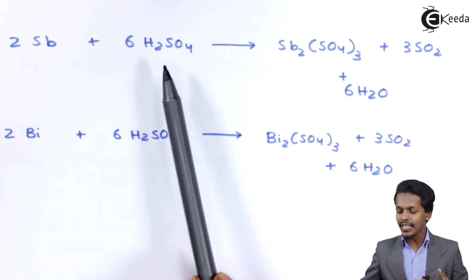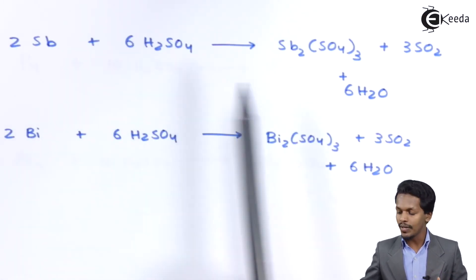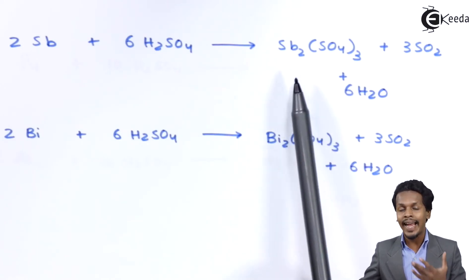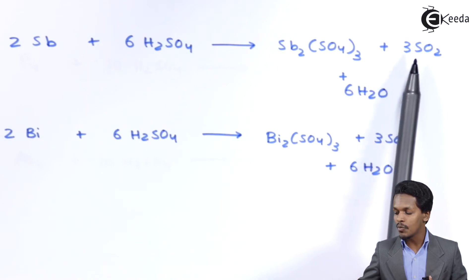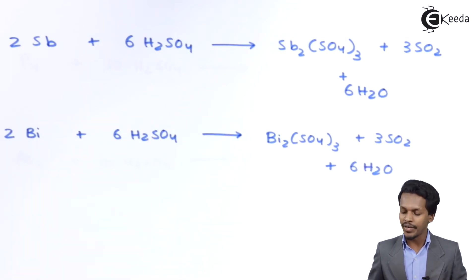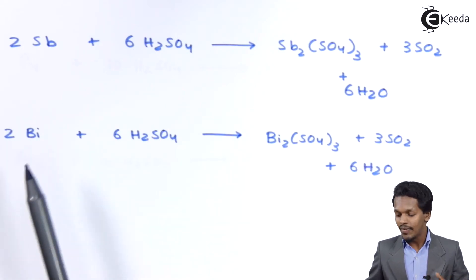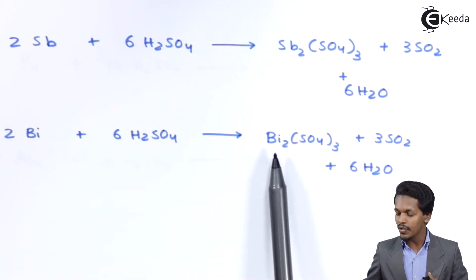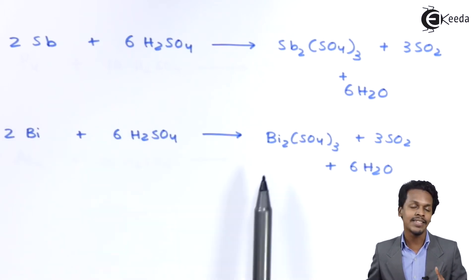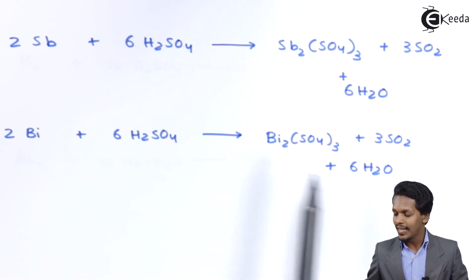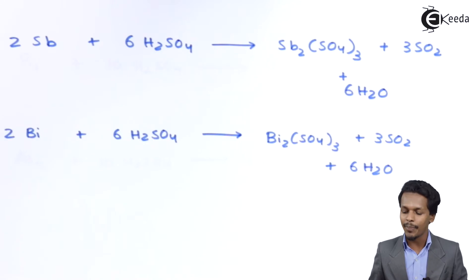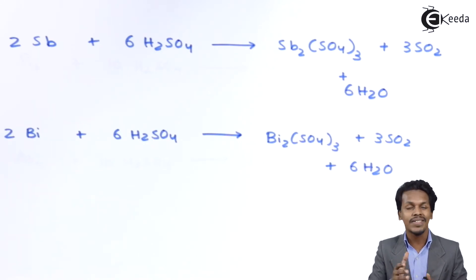Antimony is reacted with hot and concentrated H2SO4 to produce Sb2(SO4)3, which is antimony sulphate, along with 3 moles of SO2 and H2O as a by-product. This was the reaction of group 15 elements with oxidizing acids.